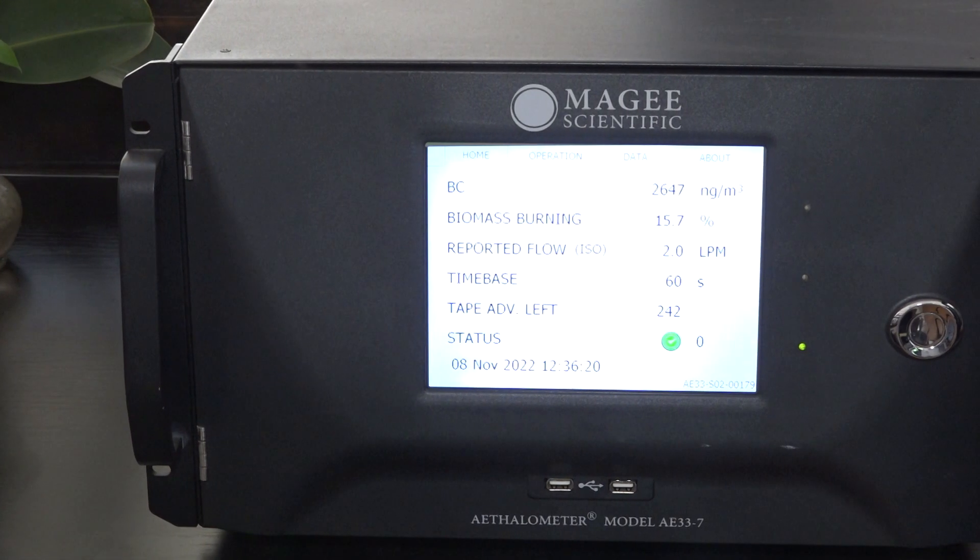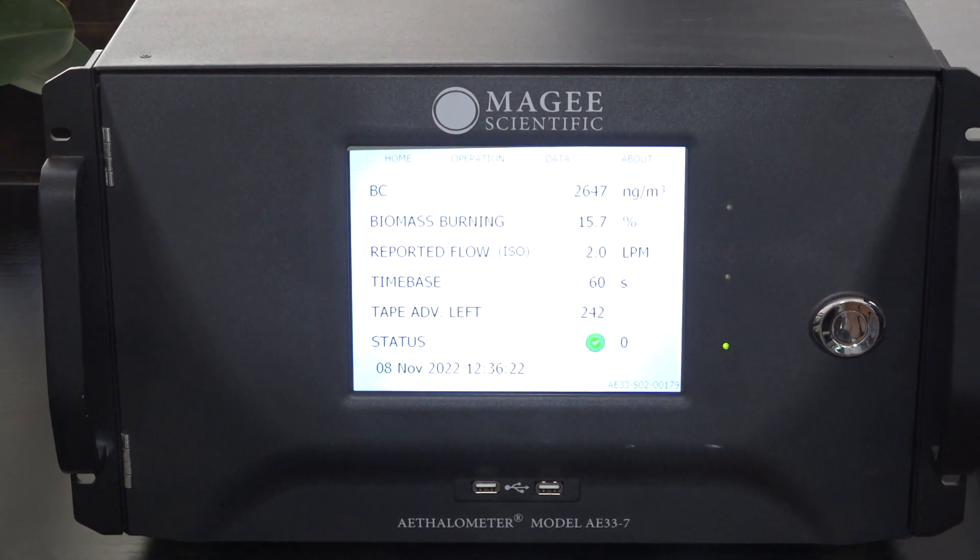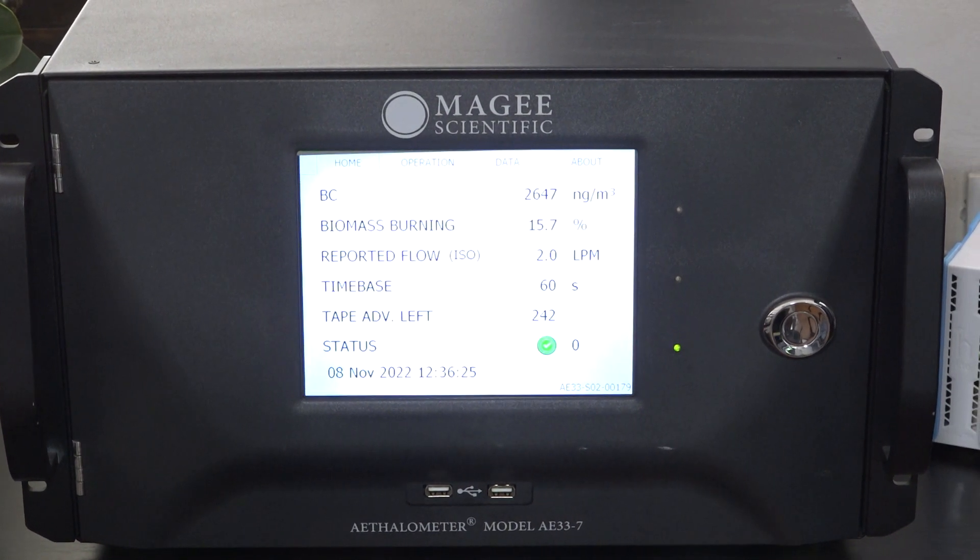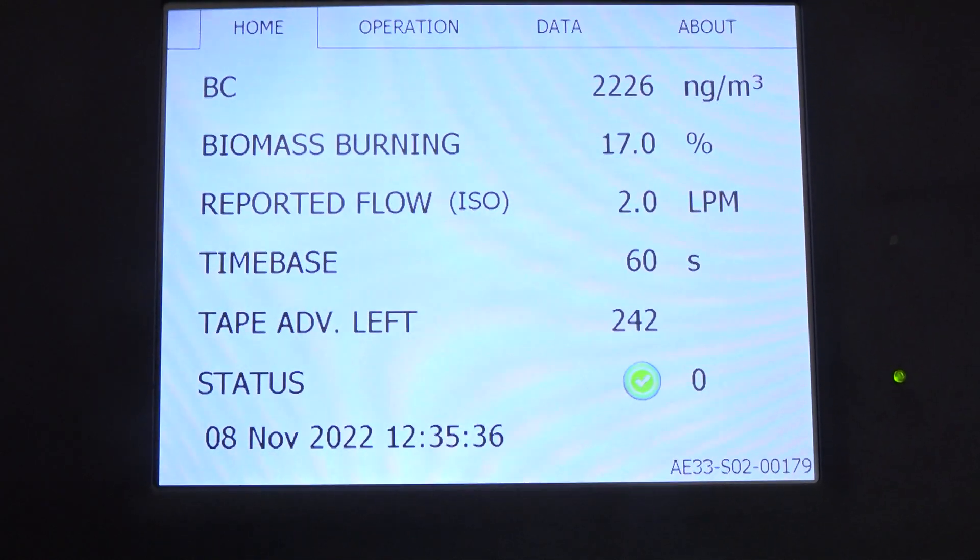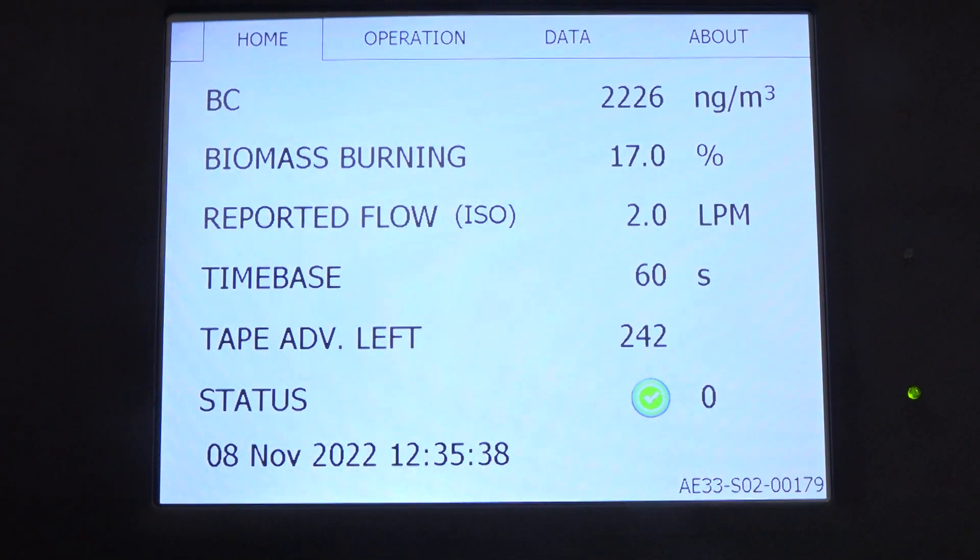Ima podružnicu u Ljubljani koji su bili ljubazni i dali nam na pozajmicu instrument za merenje crnog ugljenjika. To je ovaj instrument ovde koji vidite, koji je povezan preko modema sa svim ostalim instrumentima. Podaci se prikupljaju u Ljubljani i nadamo se da ćemo uskoro imati vrlo reprezentativne, jer ovo je prvo merenje na teritoriji Srbije ove vrste.